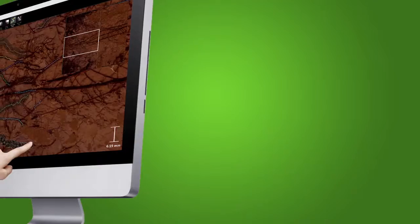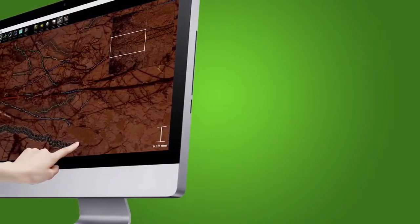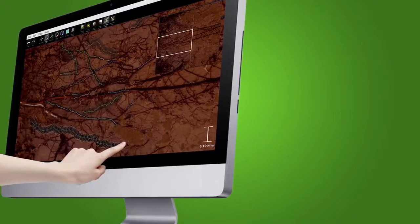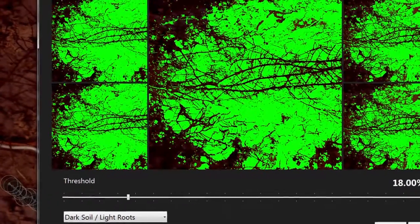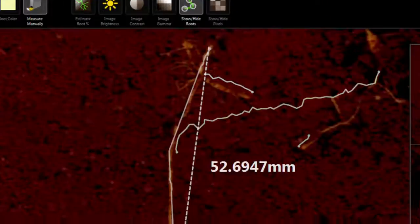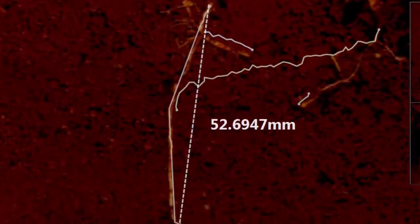Later, these images are downloaded to a computer where they can be analyzed using the included RootSnap image analysis software. Using RootSnap, growers can easily map roots and measure aspects such as root length, area, volume, and diameter.